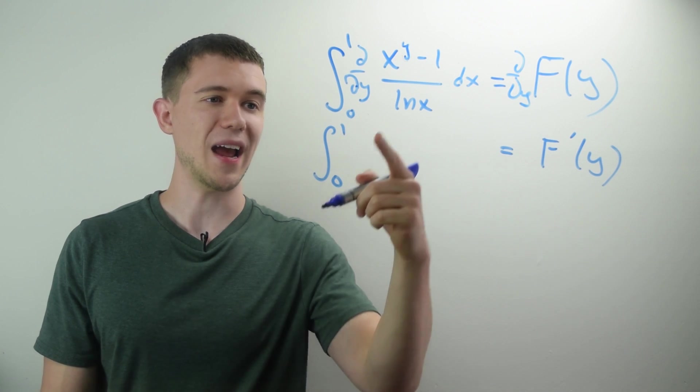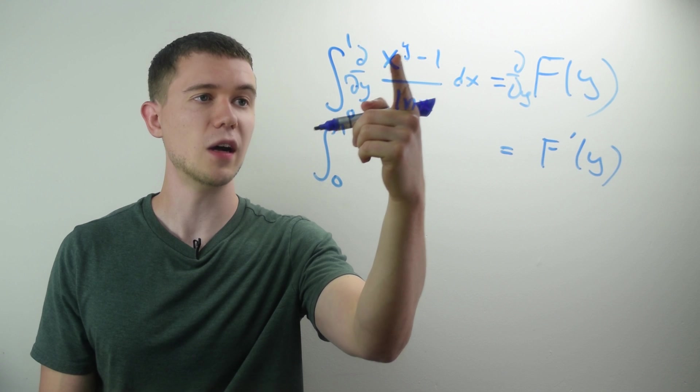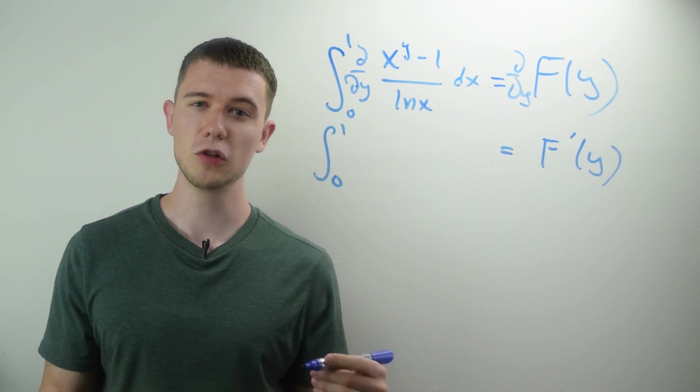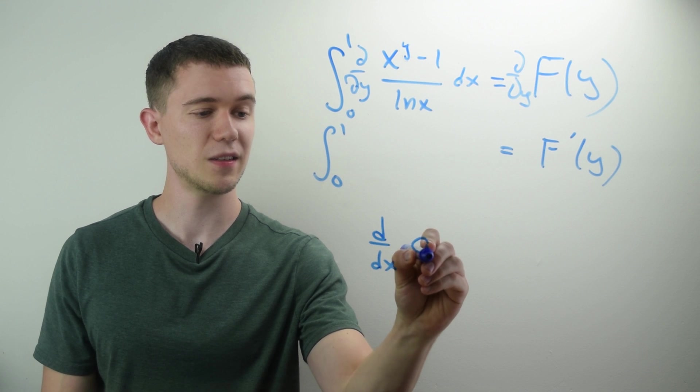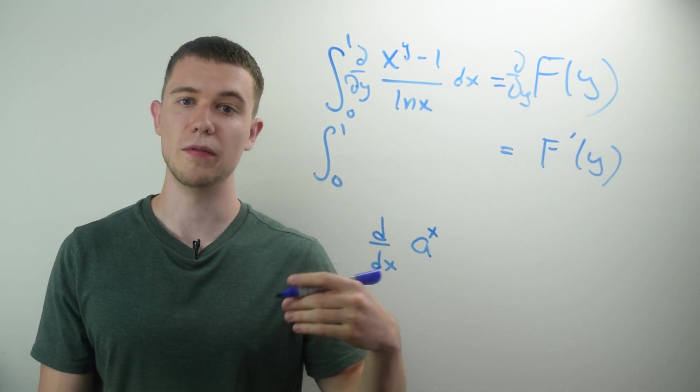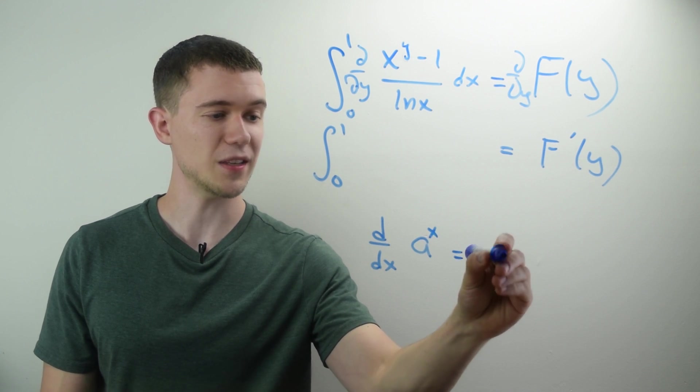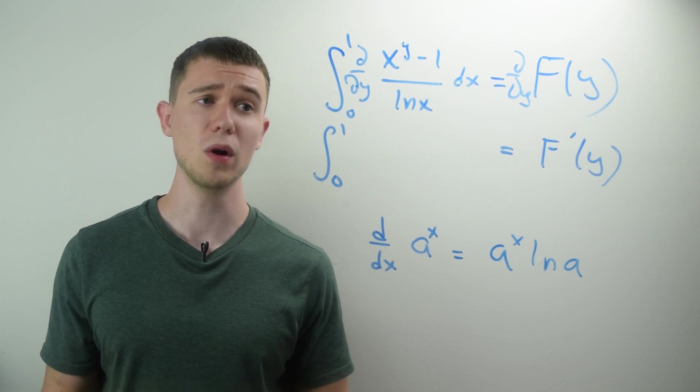So x is a constant, natural log x is a constant. This is really like a constant to a variable power. I'll just remind you, if you're taking the derivative of a constant to a variable power, for example, like the derivative of a to the x where a is a constant, its derivative is a to the x natural log a. That's the formula from calc 1.